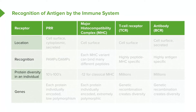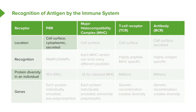Let us look at lymphocyte development, the way that lymphocytes develop in the body. The recognition of antigen by the immune system occurs using four different types of molecule. The pattern recognition receptors, which are present on cell surfaces, inside cells, and secreted or released from cells, recognize pathogen-associated molecular patterns and damage-associated molecular patterns.